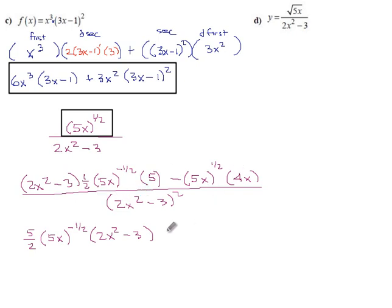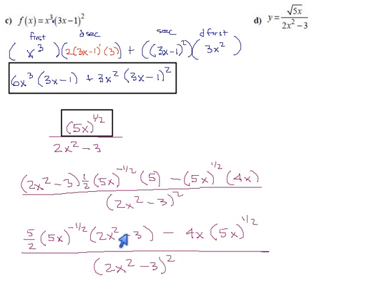For the second term, we have 4x times 5x to the half, and all that is over 2x squared minus 3 all squared. I don't see any obvious cancellations. We could double the entire top if this fraction bugs you—and it does bug me a little. You could double all this and then you'd end up with 5 and minus 8 and a 2 in the denominator. Just multiply the top and bottom by 2, but stopping here wouldn't be so bad either.